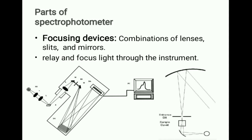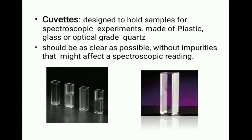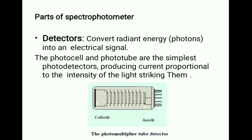Next we have a focusing device — the combination of lens, slit, and mirror — to relay and focus light through the instrument. Then we have a cuvette designed to hold sample for spectroscopic examination, made up of plastic, glass, or optical grade quartz. It should be as clean as possible without impurities that might affect a spectrophotometric reading. Next we have our detectors that convert radiation — photons — into electrical signals. The photocell and the phototube are the simplest photodetectors, producing currents proportional to the intensity of the light striking them.